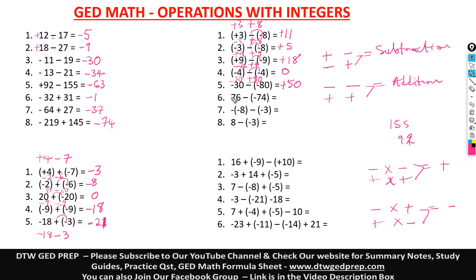Here the sign is positive, and negative times negative is positive. So we have 76. Positive and positive means we do addition — giving us a positive 150.